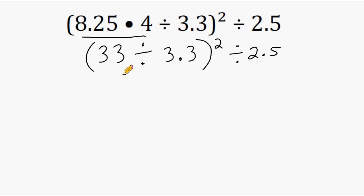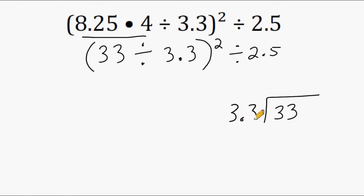We still have something to do inside the parentheses, which is 33 divided by 3.3. Now remember, if you have a decimal in the divisor, you have to put a 1 at the very end of the dividend and then put a zero after that decimal. Next, you take your decimal point and move it all the way to the right. Because we had to jump over one place value to get to the end of that number, we have to do the same thing with the decimal on the inside — move it one space to the right and then move it directly above.